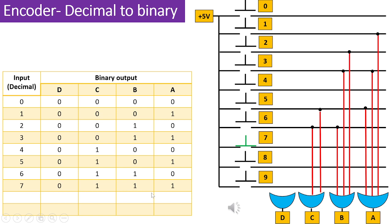Now, suppose we press switch 7, causing it to activate the line on the other side of the switch, resulting in a logic 1. However, given that the binary representation of decimal 7 is 0111 in a 4-bit format, the OR gates with their outputs labeled as input C, B and A are connected to the switch marked as 7. As a result, when switch number 7 is pressed, the output transforms into 0111.